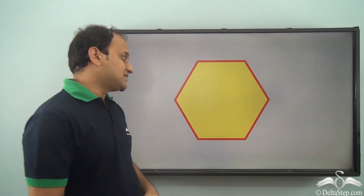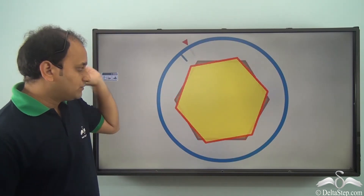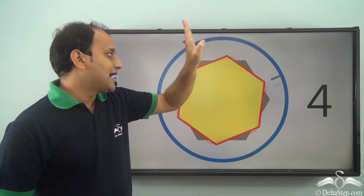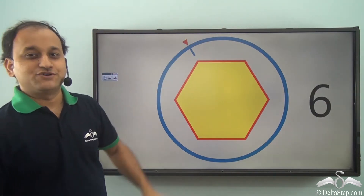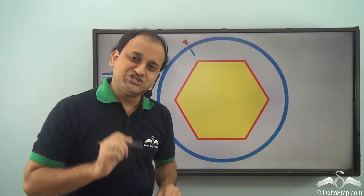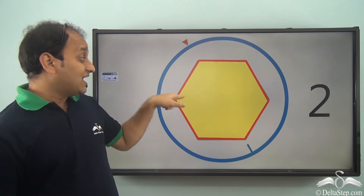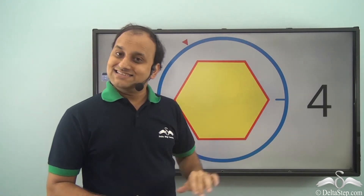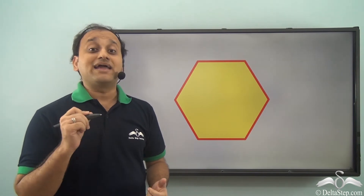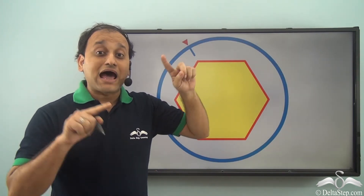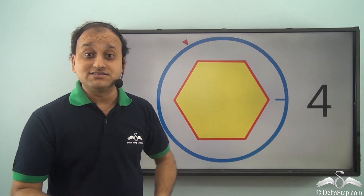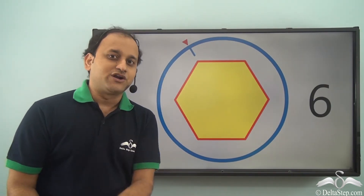What about this hexagon? Let's rotate it: one, two, three, four, five, six times. It fits into itself six times before completing one full turn, so the order is six. And again, we see it has six equal sides. This is a very important indicator — by counting the number of similar or identical-looking sides, arms, or petals of an object showing rotational symmetry, you can determine the order of its rotational symmetry.